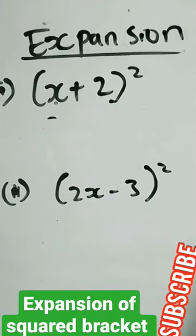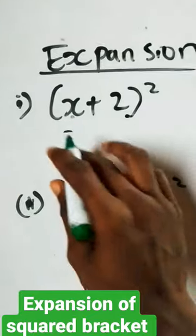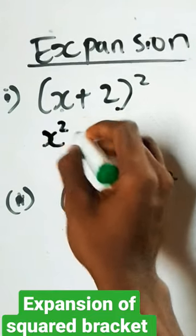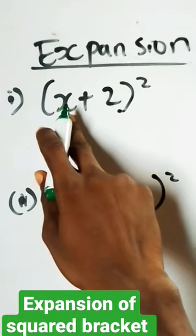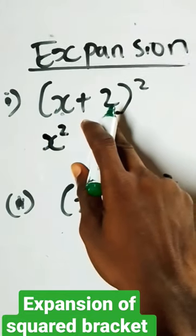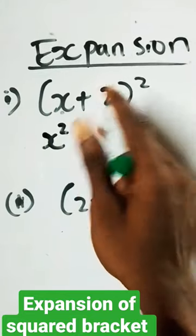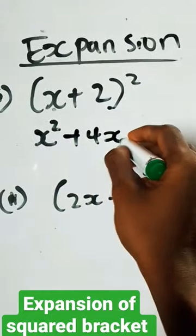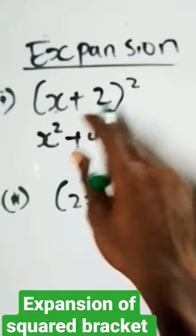Now, expansion of squared brackets done in five seconds. What you do is square the first term, which is x squared. Then you multiply x by 2, and multiply that by the next value, which is 2 also, so we get plus 4x. Then finally you square this last value, which is 2, you have 4, plus 4.